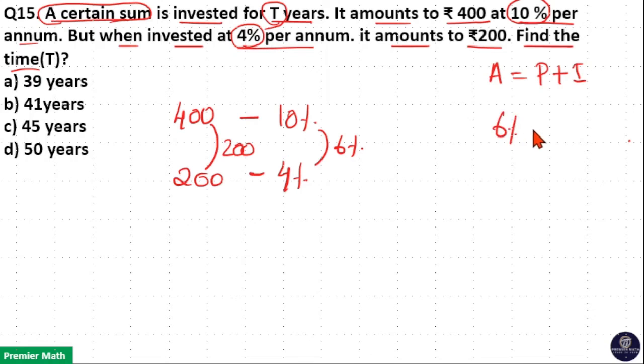Now, if 6% is Rs. 200, then we need to find out 10%, because you already know this is the amount. Amount means principal plus interest.